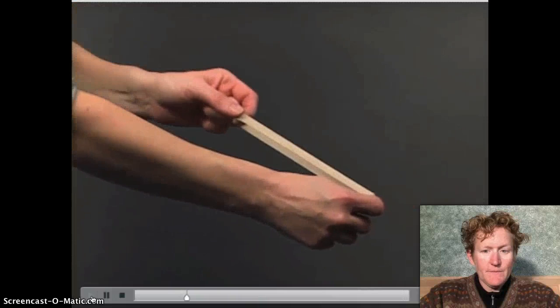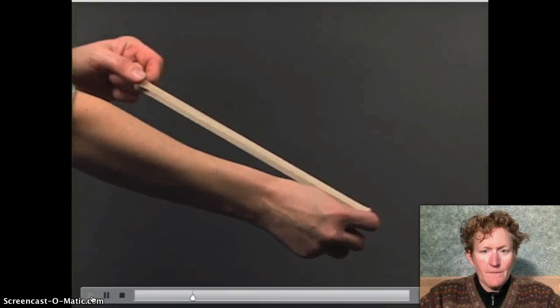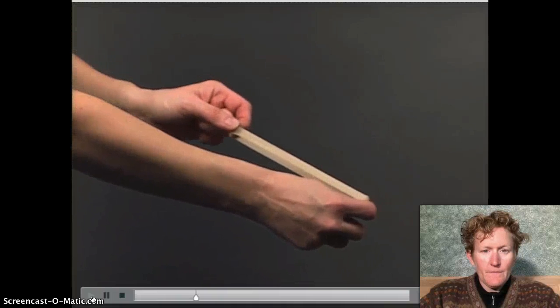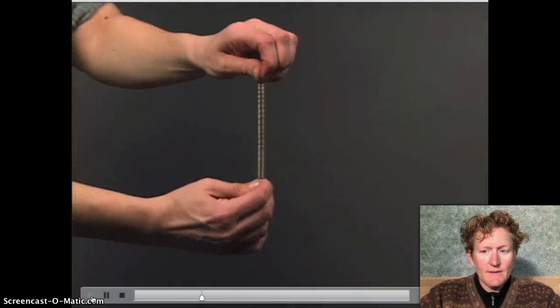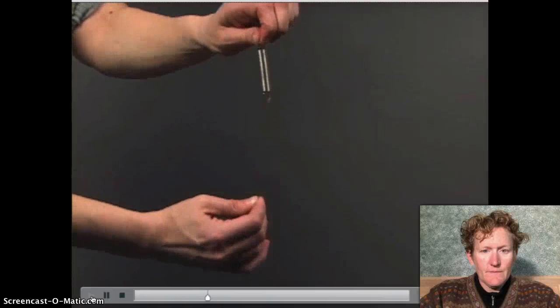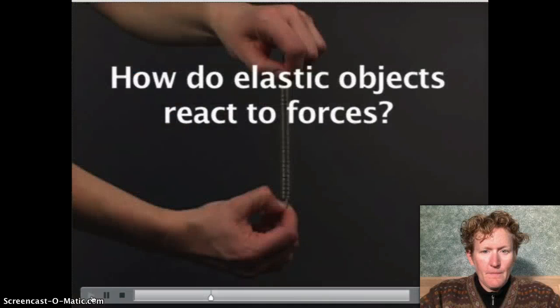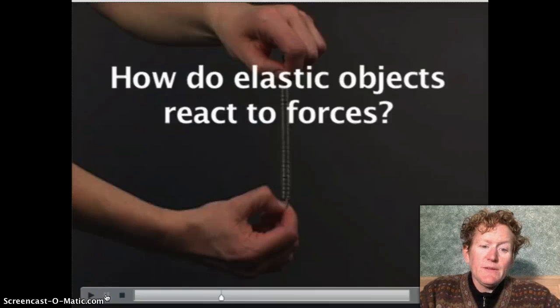That is, the rubber band goes back to the shape it was before. If a solid recovers its shape after being pulled, pushed, or stretched, it is said to be elastic. Springs, bungee cords, and rubber bands all have elasticity. The important question to consider in this lab is, how do elastic objects behave when different forces are applied? You might want to write that one down.